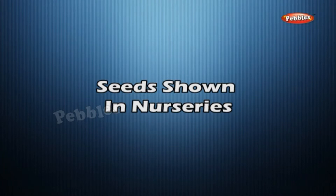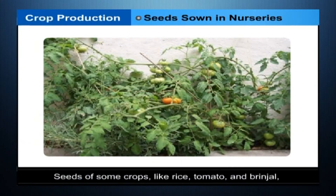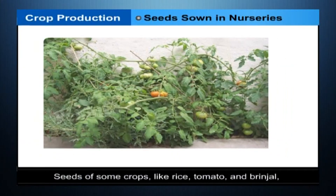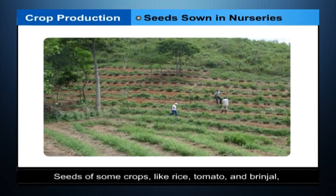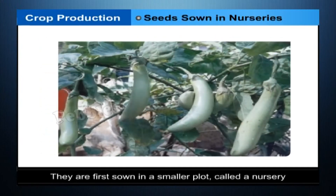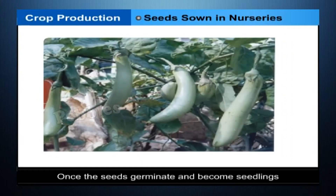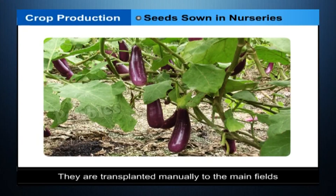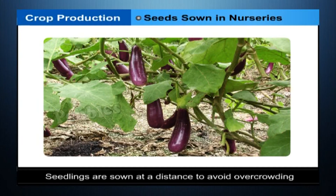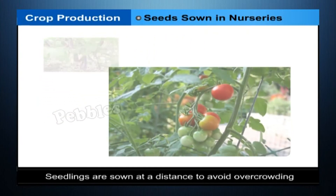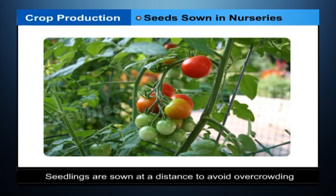Seeds Sown in Nurseries: seeds of some crops, like rice, tomato and brinjal, are not planted directly in the main fields. They are first sown in a smaller plot called a nursery. Once the seeds germinate and become seedlings, they are transplanted manually to the main fields. Seedlings are sown at an appropriate distance from one another to avoid overcrowding.